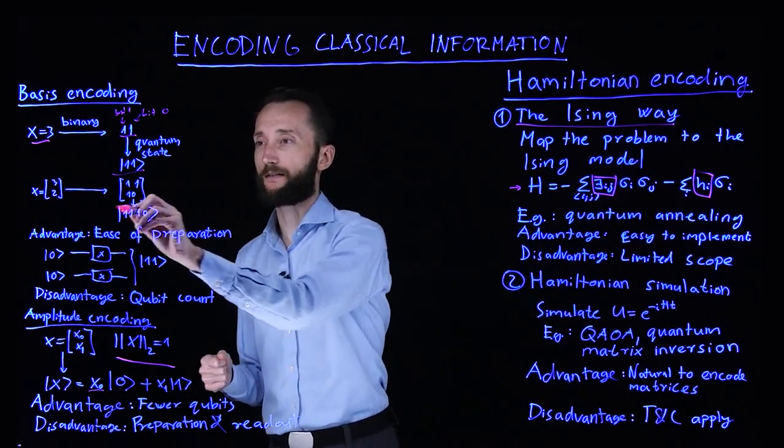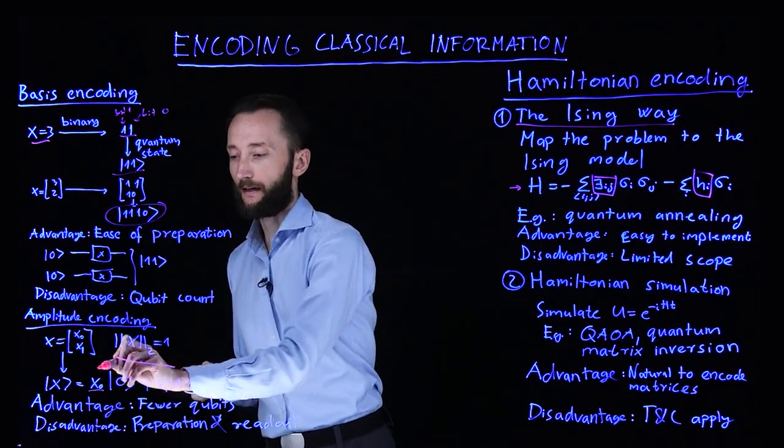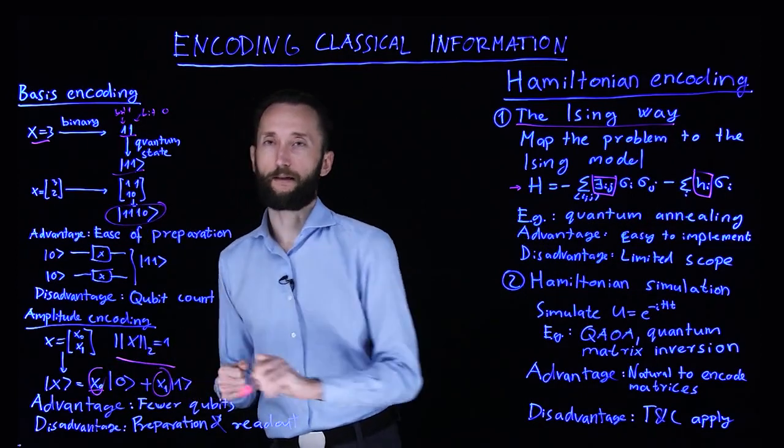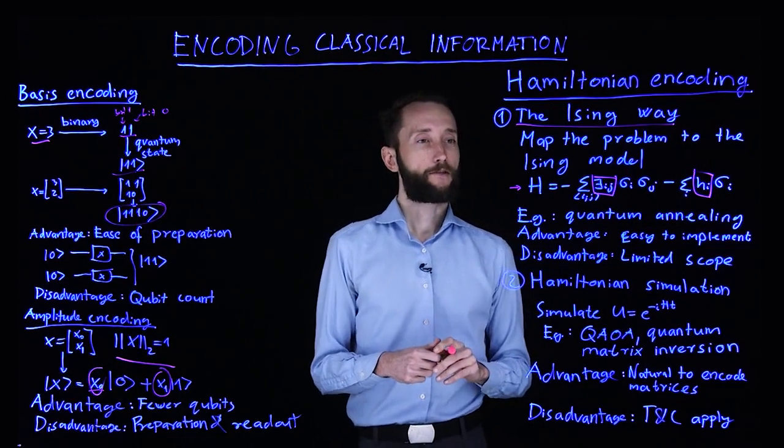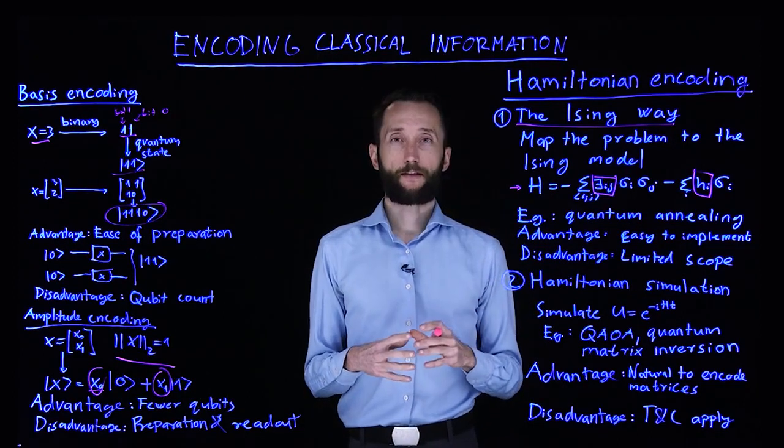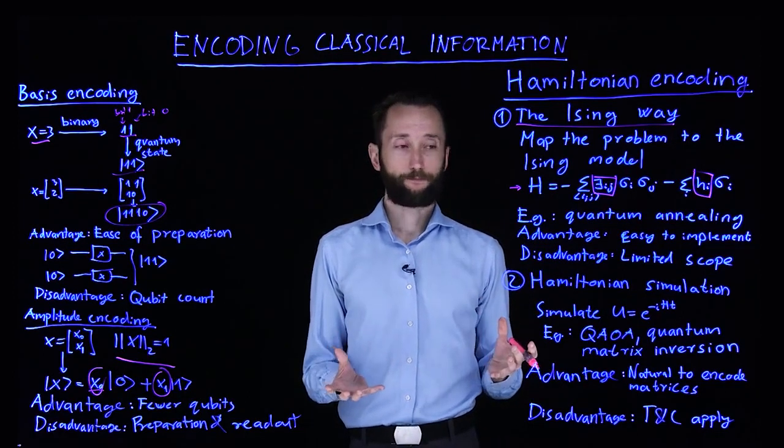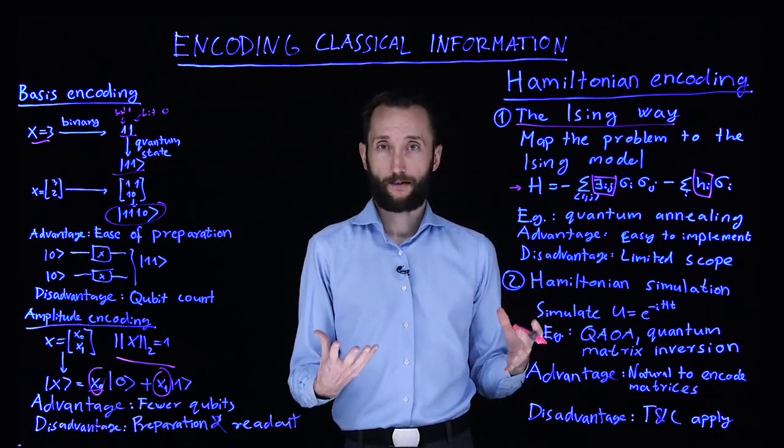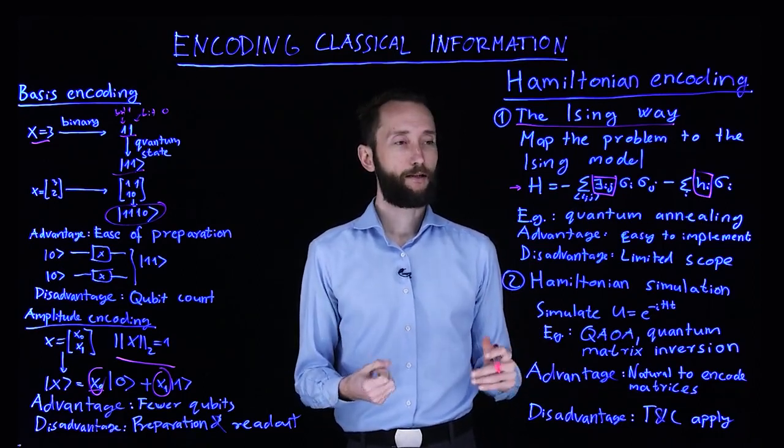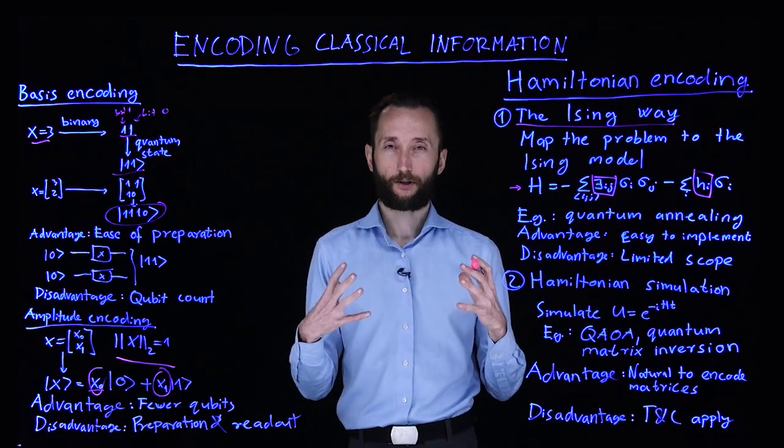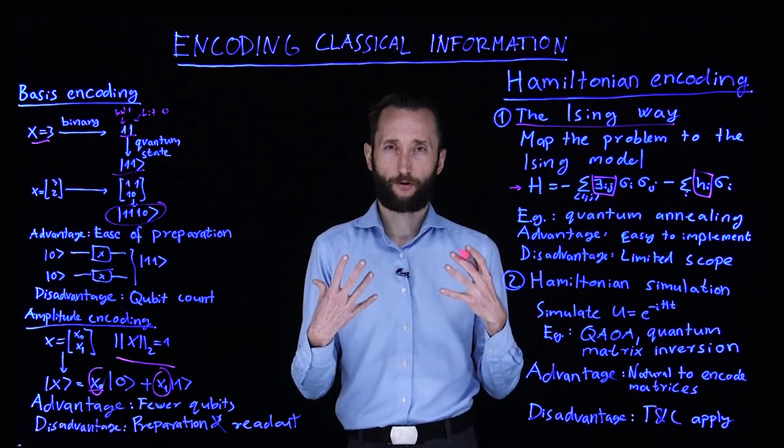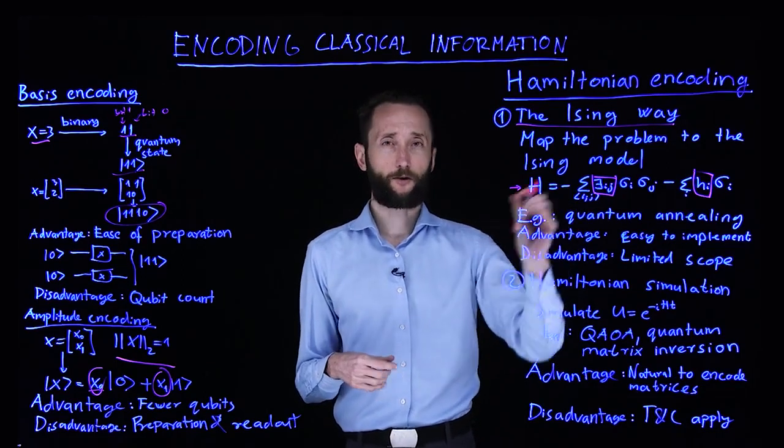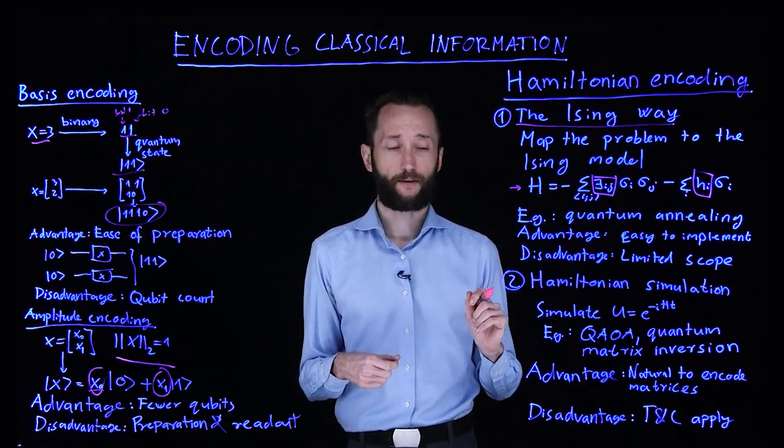Whereas here it was the state and here it were the probability amplitudes. So the advantage of this is that it's fairly easy to implement. We are up to thousands of qubits in a physical system implementing this model. But the disadvantage is that it has a very limited scope in what you can do. You can solve either optimization or sampling problems with this paradigm.